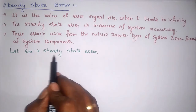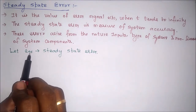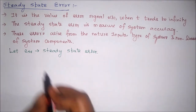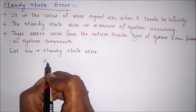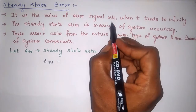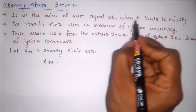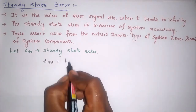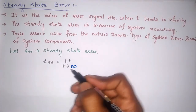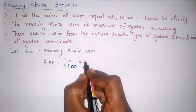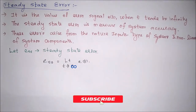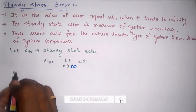Now we are going to derive the steady state error. Let Ess be the steady state error. We already know that steady state error equals the error signal at t tends to infinity, therefore: limit as t tends to infinity of e(t). This is the steady state error.